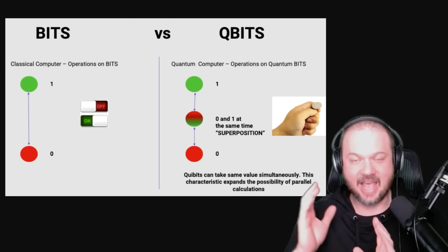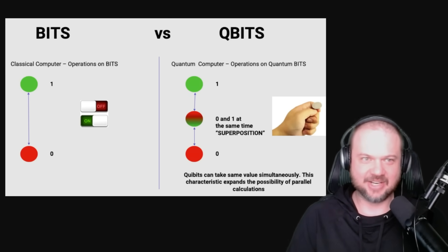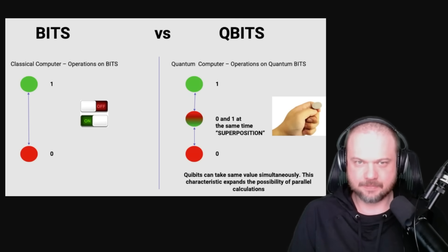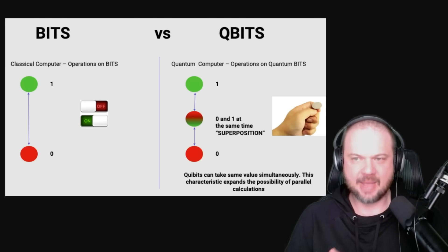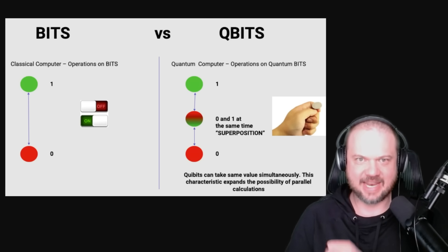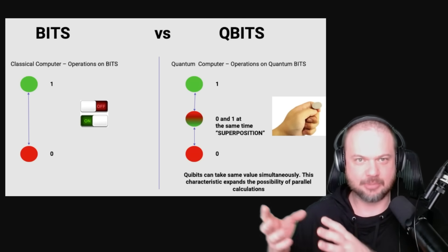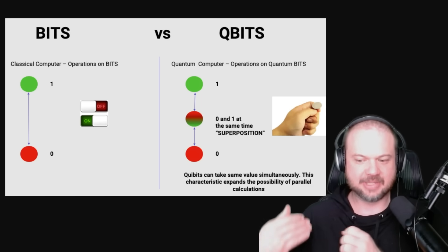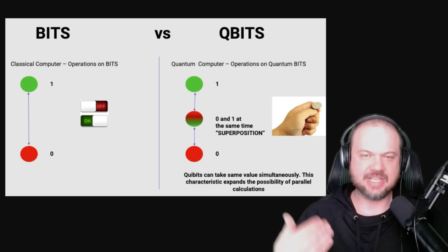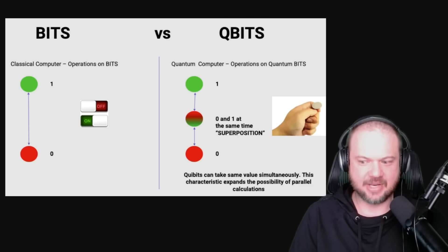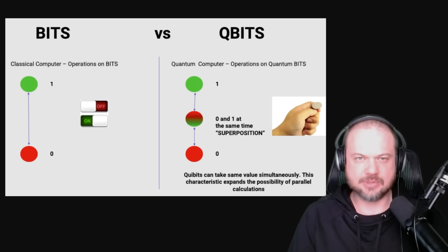There's a big asterisk here in that this is only true for certain problems. There's a lot more to unpack, specifically with quantum entanglement and how that's used to do the actual computation. But the big point to understand is that qubits are very error-prone — when using these qubits for calculations, they have a very high error rate.